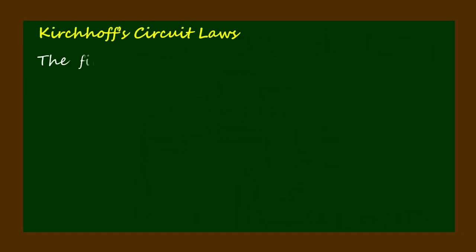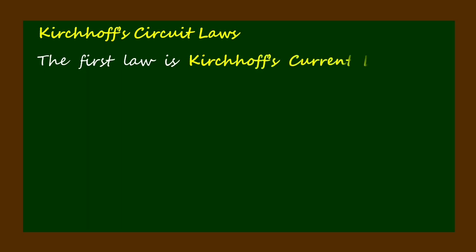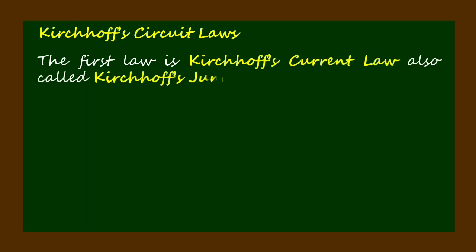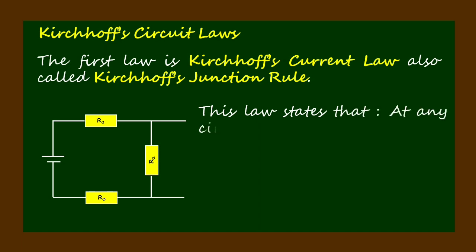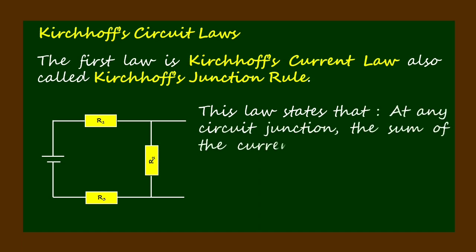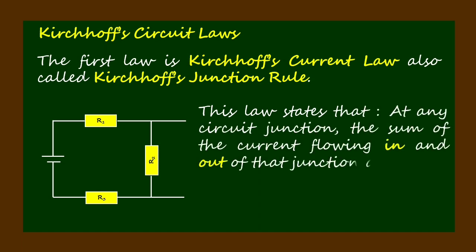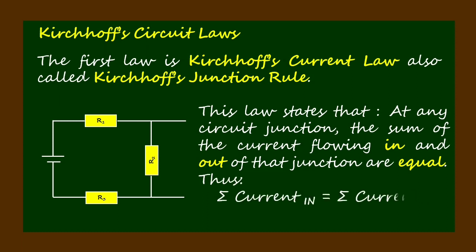The first law is Kirchhoff's current law, also called Kirchhoff's junction rule. This law states that at any circuit junction, the sum of the current flowing in and out of that junction are equal. Thus, the summation of current in equals the summation of current out.